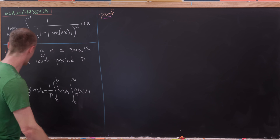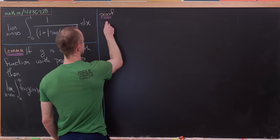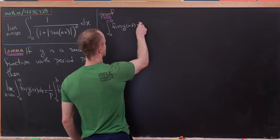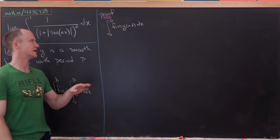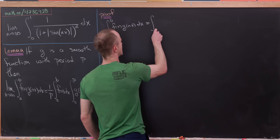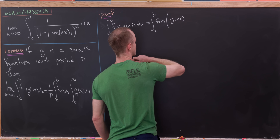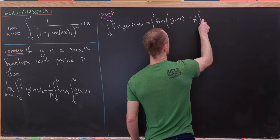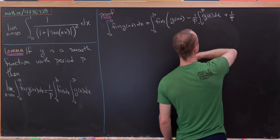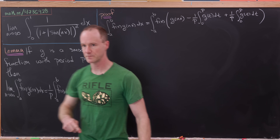Let's see how we're going to approach this lemma. We start with the integral from a to b of f of x times g of n times x dx. What we'll do is add and subtract the same thing — in other words add zero. We'll have the integral from a to b of f of x times g of nx, minus 1 over p times the integral from 0 to p of g of t dt, and then add that back in: 1 over p times the integral from 0 to p of g of t dt.